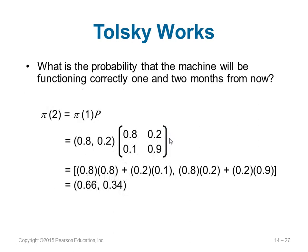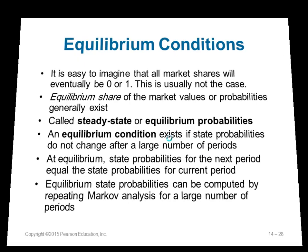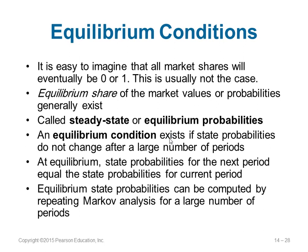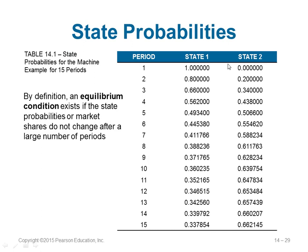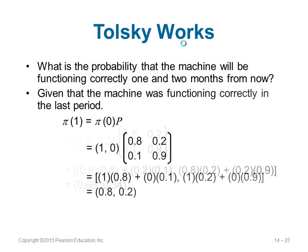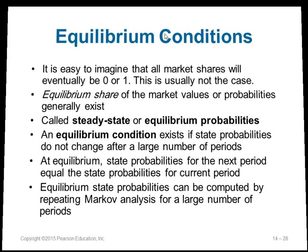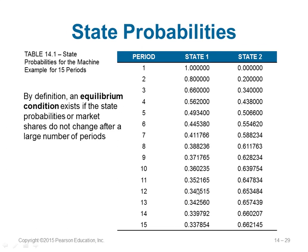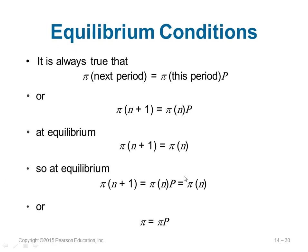There is what is called an equilibrium share, also called steady state or equilibrium probabilities. When equilibrium exists, the state probability does not change after a large number of periods — the probabilities of the current period equal those of the next period. So at equilibrium, pi of n plus 1 equals pi of n, which means pi equals pi times P. Starting with 1 comma 0, the Tokski example shows probabilities shifting to 0.8 comma 0.2 and continuing to change until steady state is reached.